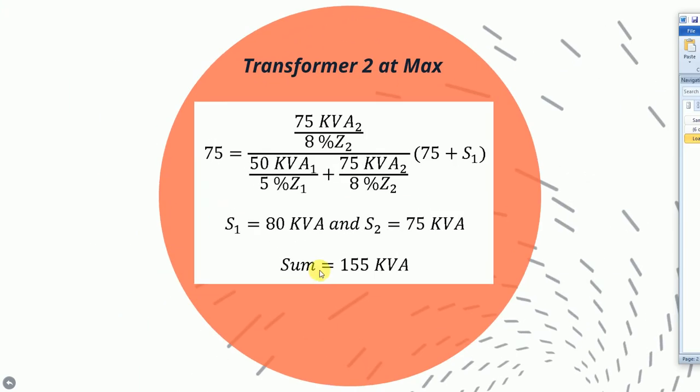Next, let's assume that Transformer 2 is maxed out at its rated capacity of 75 kVA. We plug in the rated capacities and percent impedances for both transformers to solve for S1, the power flow through Transformer 1. This results in 80 kVA through Transformer 1 and the assumed 75 kVA through Transformer 2. This solution is not possible since the power flow through Transformer 1 exceeds its rated capacity of 50 kVA.